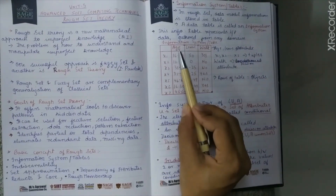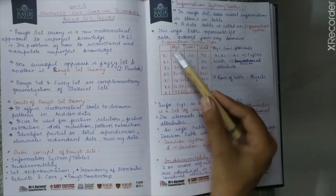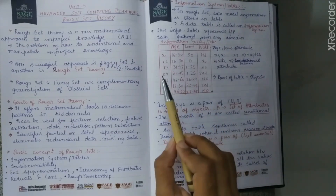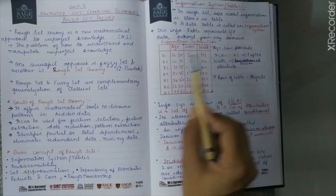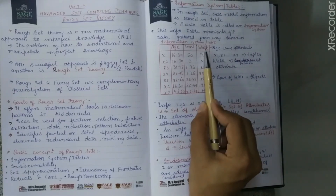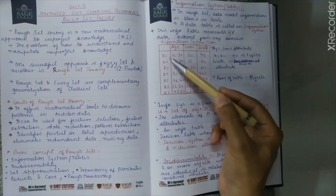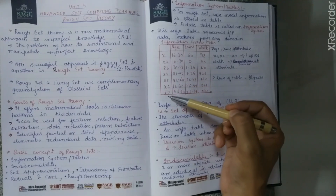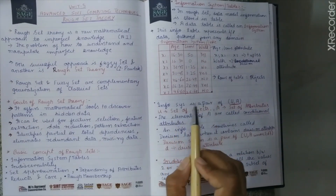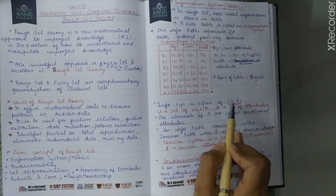In this table, you can see age, length, and attributes. The attributes are the column attributes of the table, and the rows of the table are the objects — x1 through x7. The numbers in the cells are the attribute values.